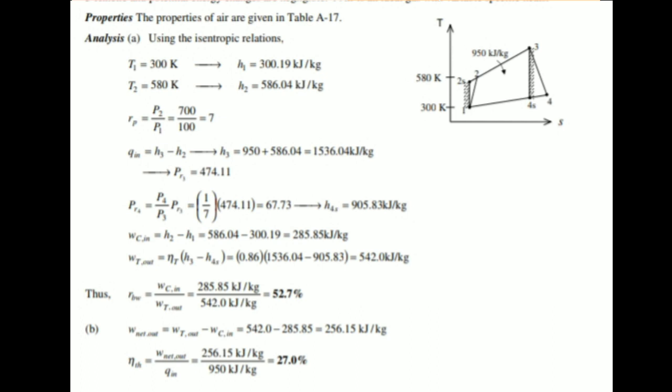The pressure ratio P is equal to P2 over P1, which equals 700 divided by 100, equals 7. Q in is equal to H3 minus H2. H3 is equal to 950 plus 586.04, equals 1536.04 kilojoules per kilogram. This gives us 474.11.